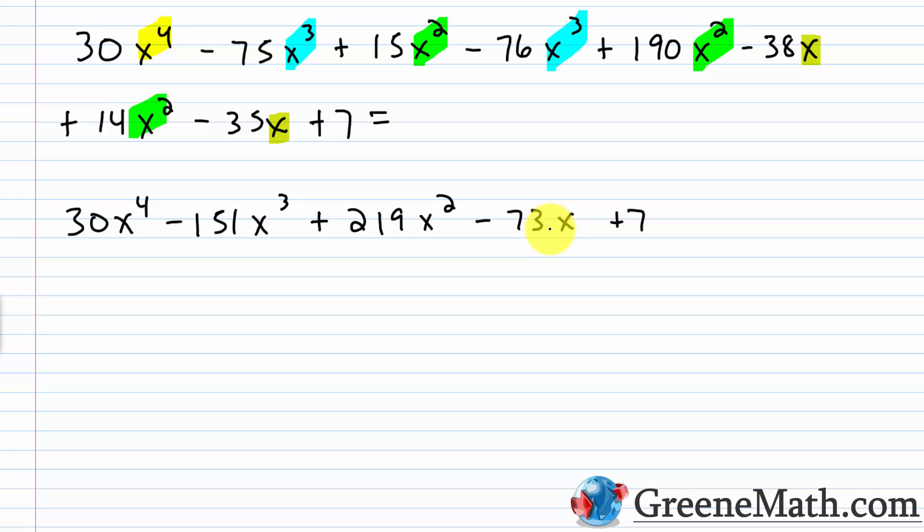So the final answer is 30x to the fourth minus 151x cubed plus 219x squared minus 73x plus 7, in standard form. Multiplying polynomials just requires understanding the rules of exponents, basic multiplication, and the distributive property.